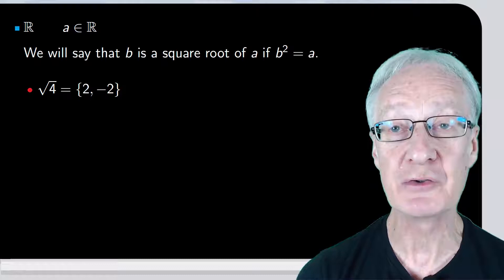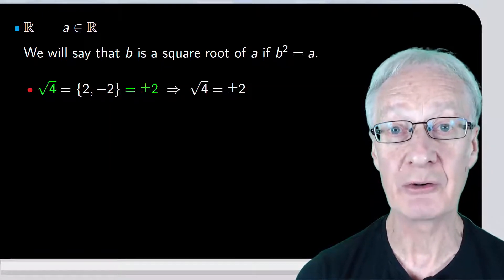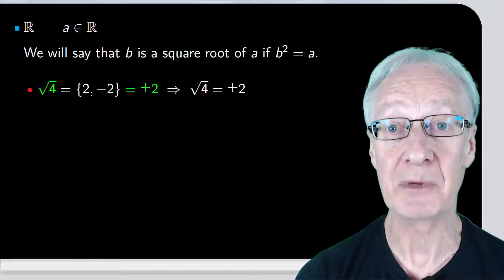Therefore, the square root of 4 is the set formed by the real numbers 2 and minus 2. To simplify things, we usually denote this as plus or minus 2. So, we write that the square root of 4 equals plus or minus 2.